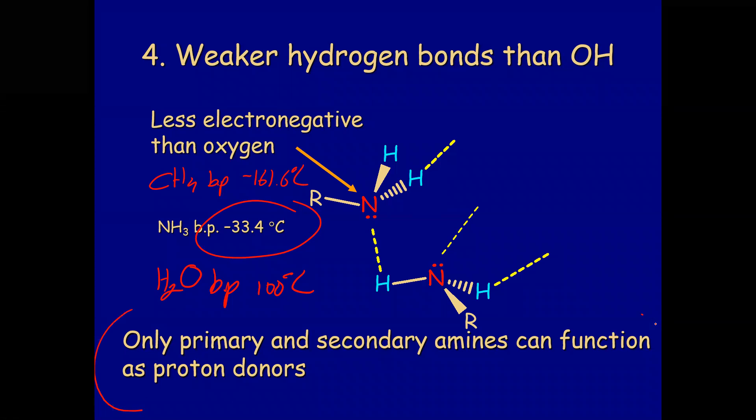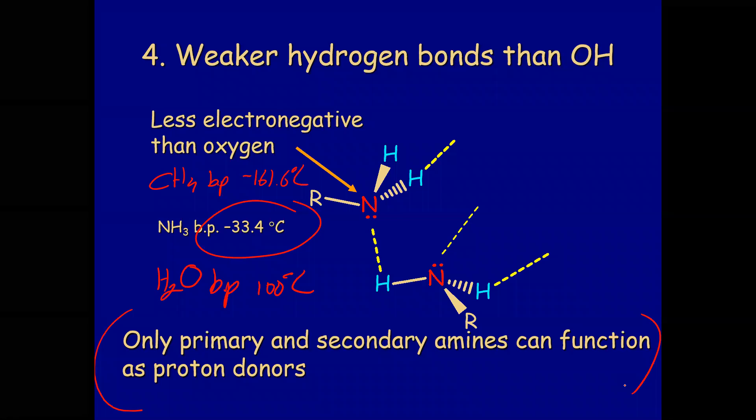Only primary and secondary amines can function as proton donors, because to be a proton donor you must have a proton. I would not normally tell you to look up boiling points for methylamine, dimethylamine, and ethylmethylamine for comparison, because at that point you are also increasing the molecular weight drastically, so the trends might not be as clear as expected.